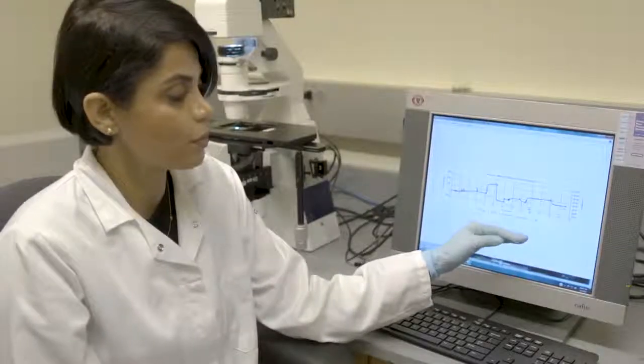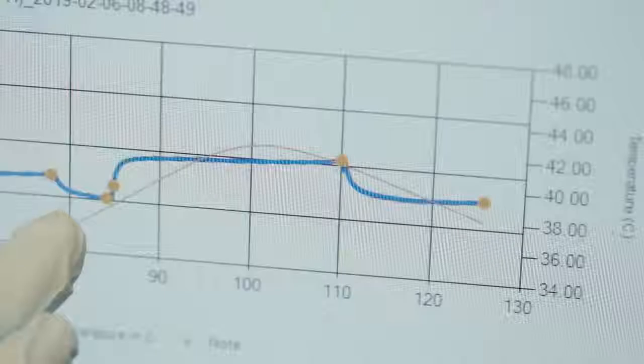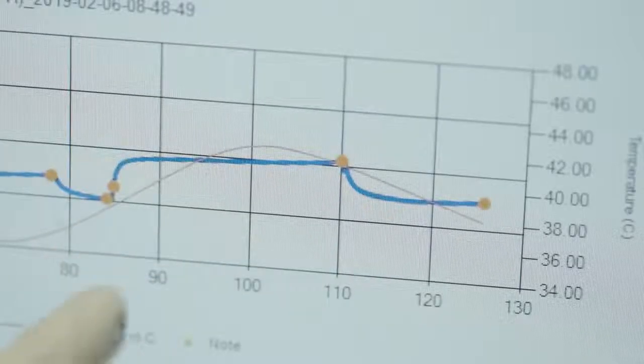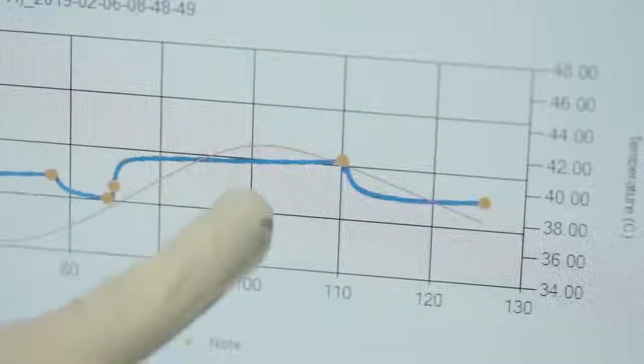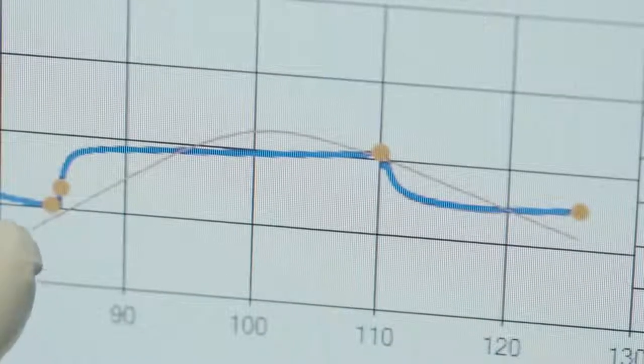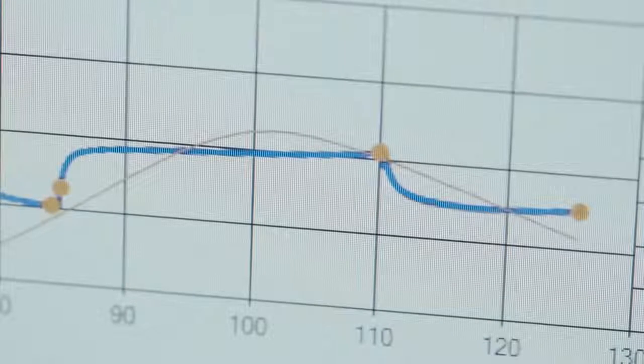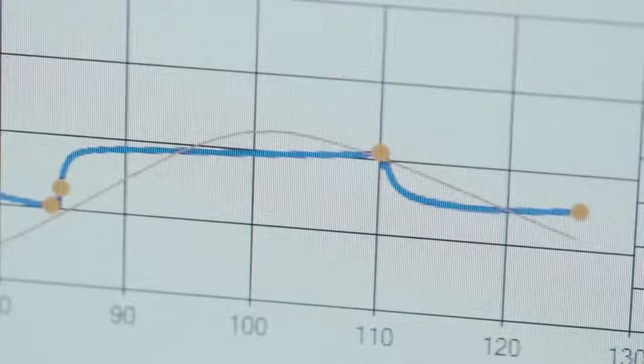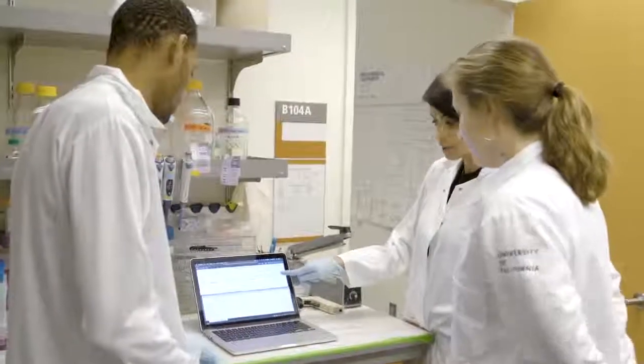This shows you the response that we get from CRISPR chip. Here, you're looking at when we actually introduce our DNA sample and remove it from the sensor. This endpoint, if it doesn't match this initial point, that means that our CRISPR chip was able to detect the gene that we programmed it to detect. This is a DMD sample.